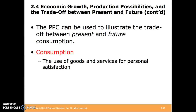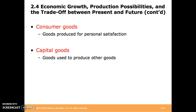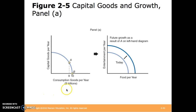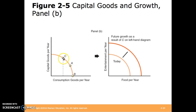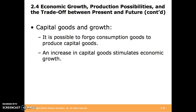The PPC can be used to illustrate the trade-off between present and future consumption. Consumption is the use of goods and services for personal satisfaction. We have consumer goods — goods produced for personal satisfaction — and capital goods — goods used to produce other goods. We see the trade-off between capital goods and consumption goods: if we invest in some capital goods and forgo some consumption goods, we can increase our production possibilities in the following year. If we choose even more capital goods, we can increase our future consumption more. It is possible to forgo consumption goods to produce capital goods, and an increase in capital goods stimulates economic growth.